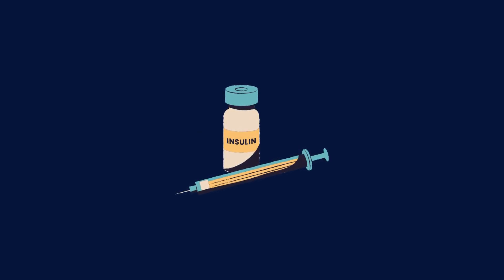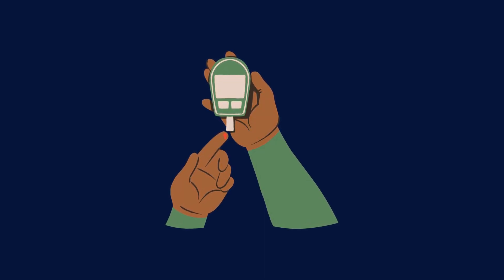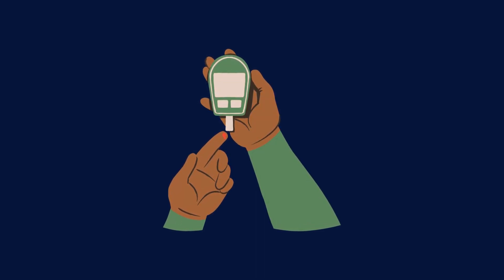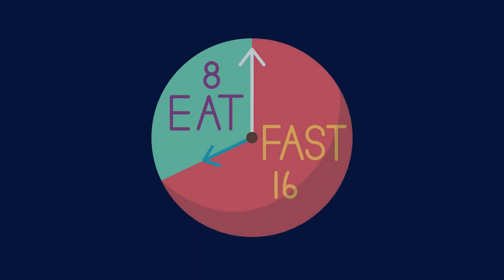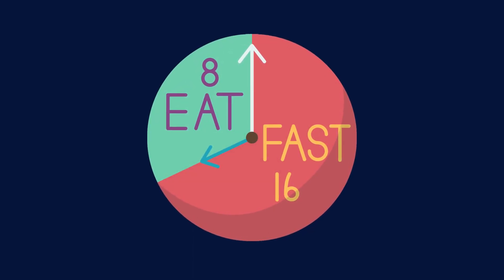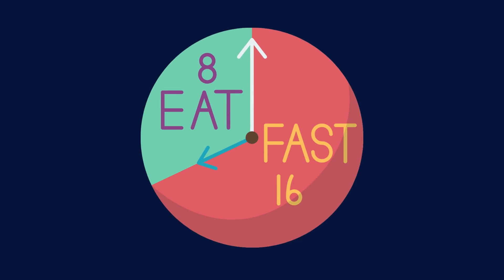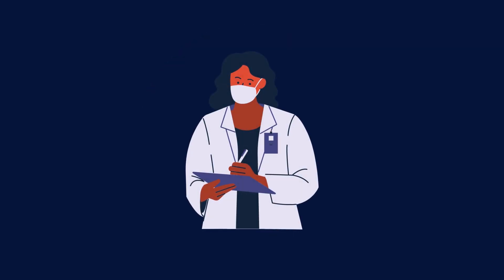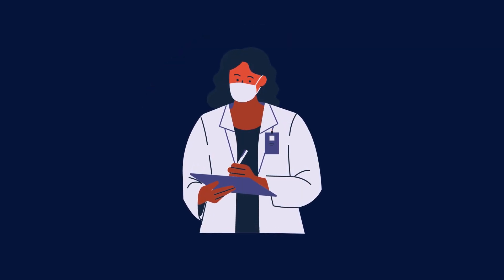Our normal blood sugar levels chart is a valuable tool to help monitor blood sugar levels. It provides easy-to-read categories of blood sugar levels during fasting, 1-2 hours after eating, as well as normal levels. Healthcare professionals use this chart to help diagnose potential blood sugar problems.